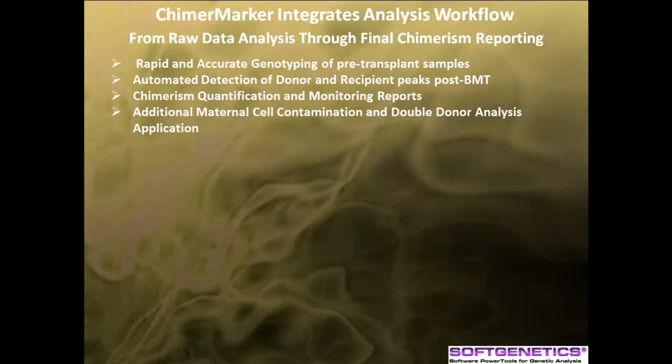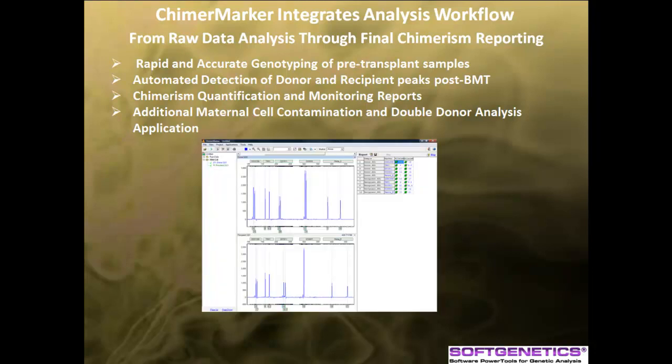ChimerMarker software integrates analysis workflow from raw data analysis to chimerism quantification and reporting. The software is compatible with all major CE instruments and human identity chemistries for rapid, accurate size and allele calls. It has a user-friendly interface and linked navigation that decreases error due to data transfer. The software automates peak identification and contains an audit trail when user management is activated.